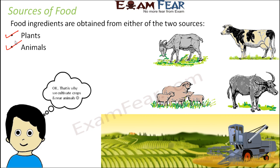We will start with plants. So why do we cultivate crops? Why do we have something called agriculture? Especially in urban areas you don't get to see it much. But if you go to the villages, you get to see huge stretches of land where crops are being cultivated — long stretches of paddy fields. Why do we have them? Because we need food.